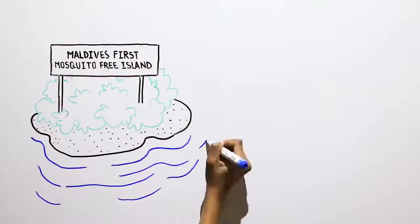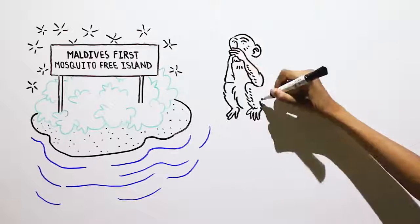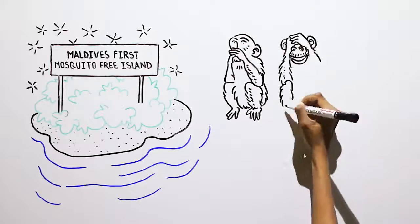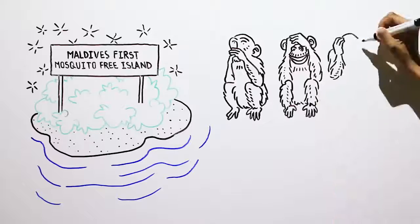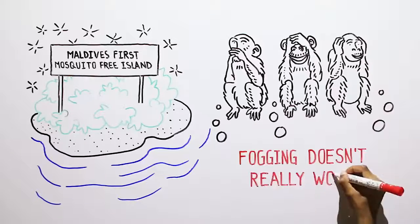We've managed to do this without using chemical fogging. That's because there's a dirty little secret about mosquito fogging that nobody in the pest control industry that provides fogging services wants to talk about. Fogging doesn't really work.